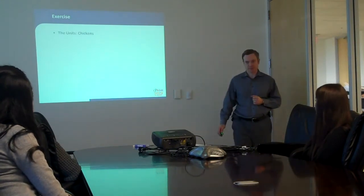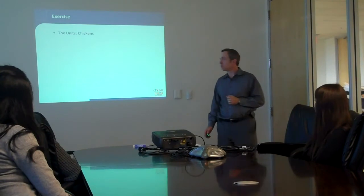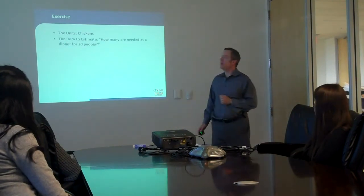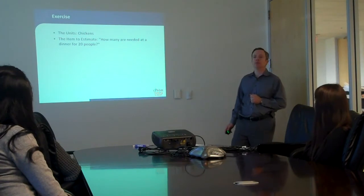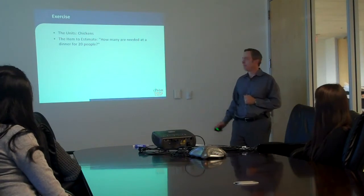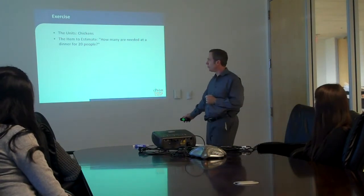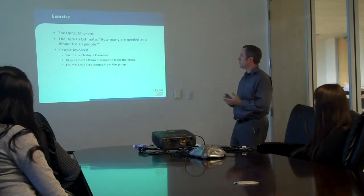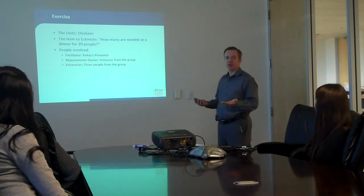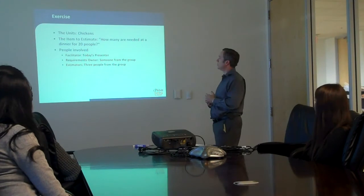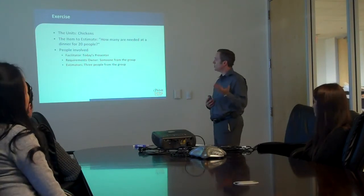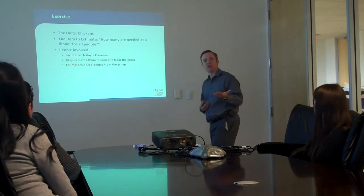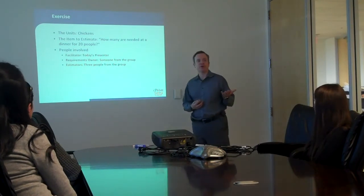The units will be chickens. What we're going to estimate is how many are needed at a dinner for 20 people. People involved: I will be the facilitator, and we're going to have a requirements owner from the group and some estimators from this group. So we have a requirements owner already identified.